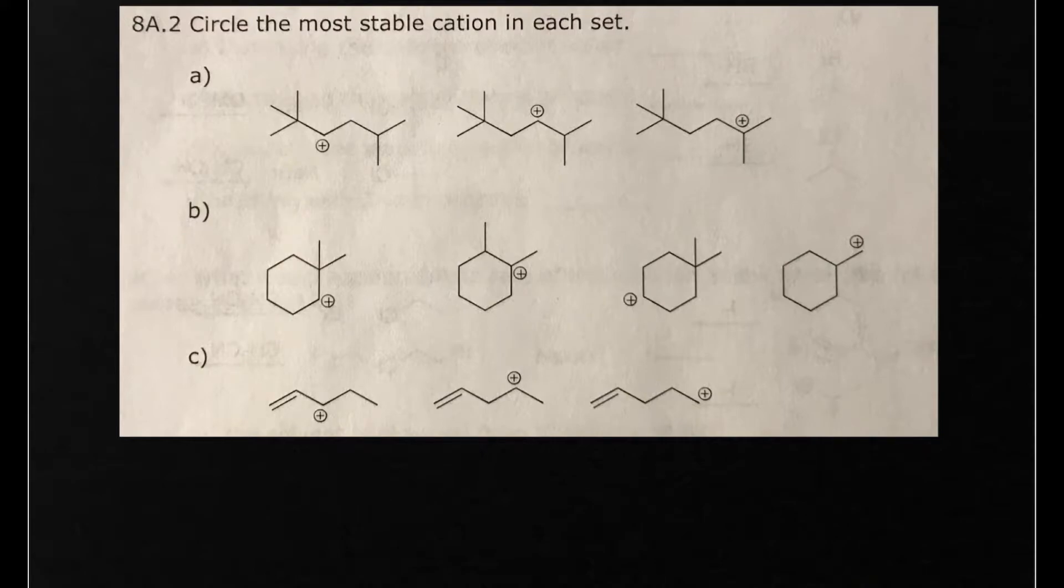Now when we're talking about carbocations, remember that the carbocation stability has the following trend. If you have things that are allylic, generally speaking they're going to be about as stable as tertiary, which is more stable than secondary, and that's much more stable than primary.